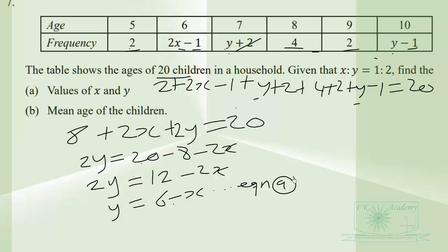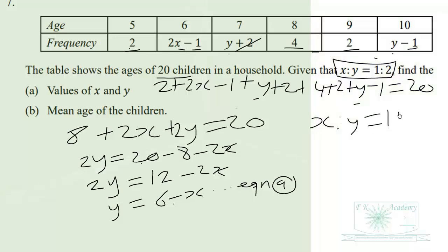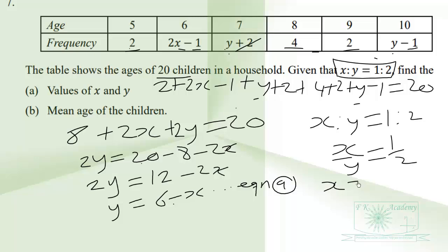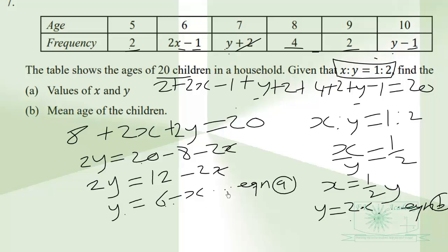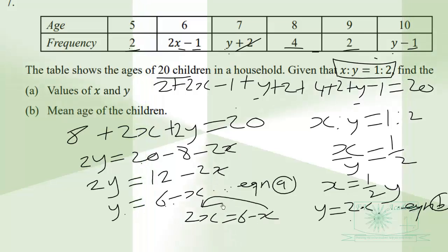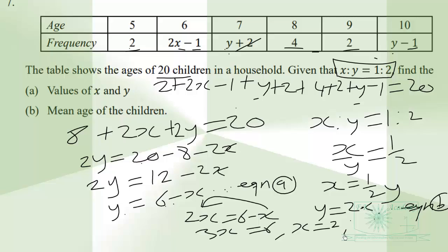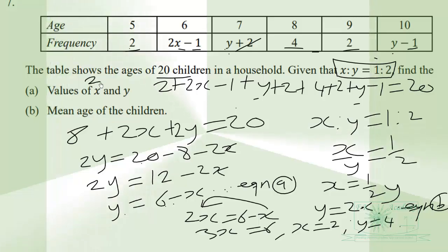We expect another equation from the ratio condition: x is to y equals 1 is to 2, which is the same as x over y equals 1 over 2, so y equals 2x. We call this equation B. Equating the two equations: 2x equals 6 minus x, giving us 3x equals 6, so x equals 2. If x equals 2, then y equals 2 times 2, which is 4. Therefore the value of x is 2 and the value of y is 4.